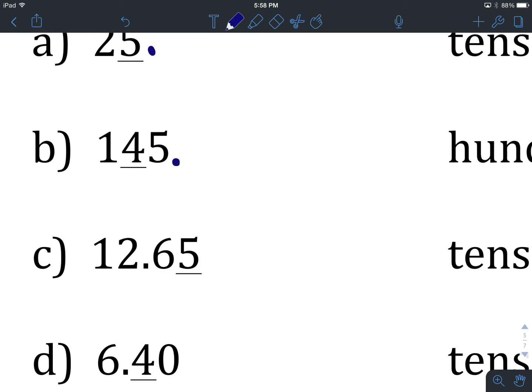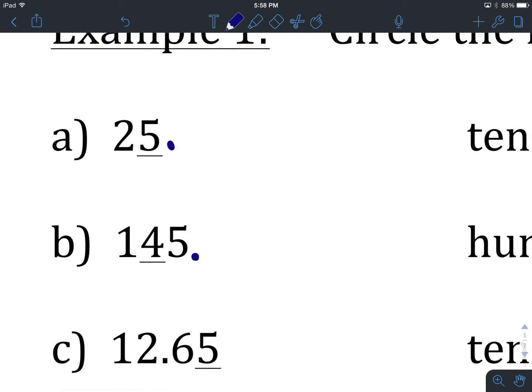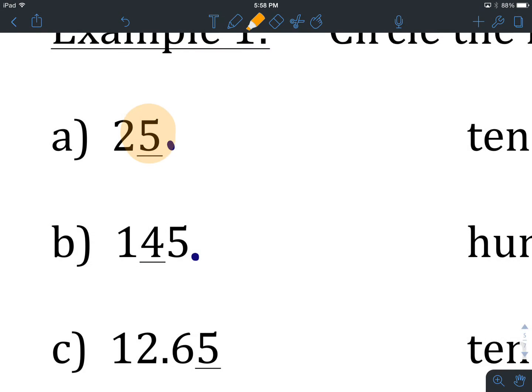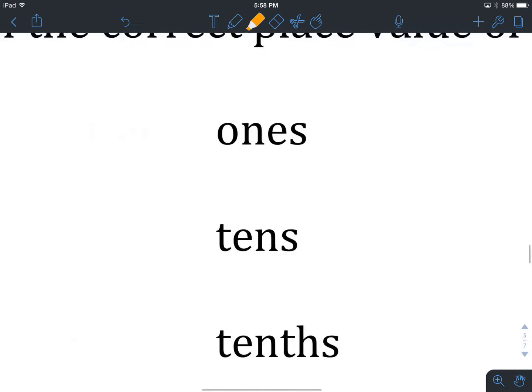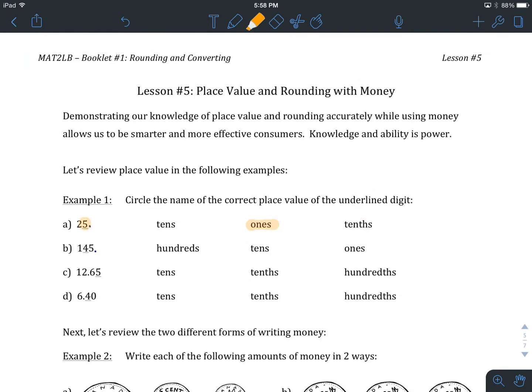I did the same thing for question B, 145, and put the decimal place in. For C and D, the decimal place was already there. Let's go back to A. We've got 25 and then our decimal place, so the place value that's underlined is one to the left of our decimal. That is not tens, it is ones or units. That is our first example.